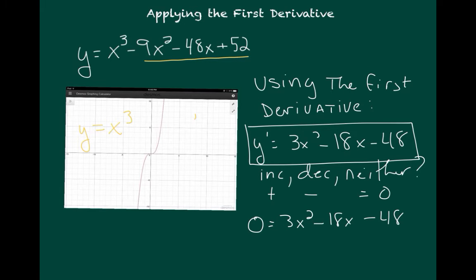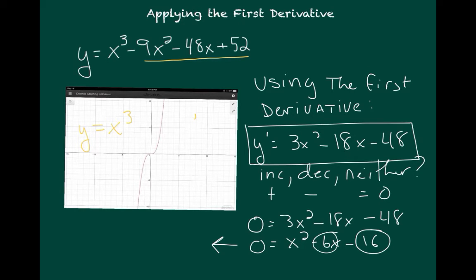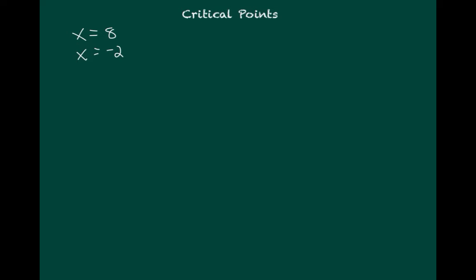Going back to algebra, I'll divide through by three: zero equals x squared minus 6x minus 16. To solve this, I can factor. The factors of 16 that have a difference of 6 are 8 and 2, so this factors to be x minus 8 times x plus 2. Therefore x equals 8 or negative 2. These two points, found by setting the first derivative equal to zero and solving for x, are called critical points.